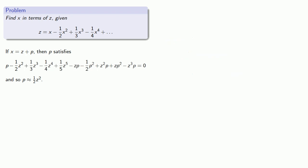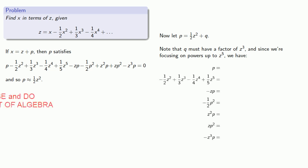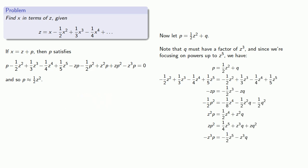And so, since P is approximately one-half Z squared, let P equal one-half Z squared plus Q. And again, Q must have a factor of Z cubed. And since we're focusing only on powers up to Z to the fifth, we have the following. And so, we see that Q and Z satisfy this equation.